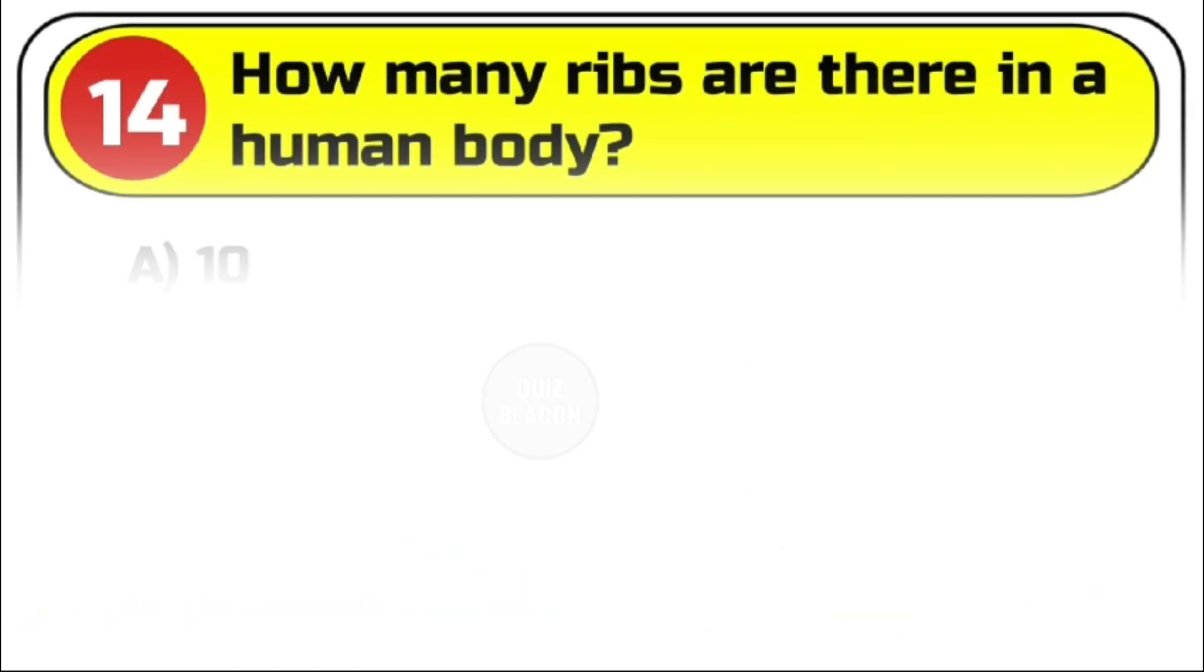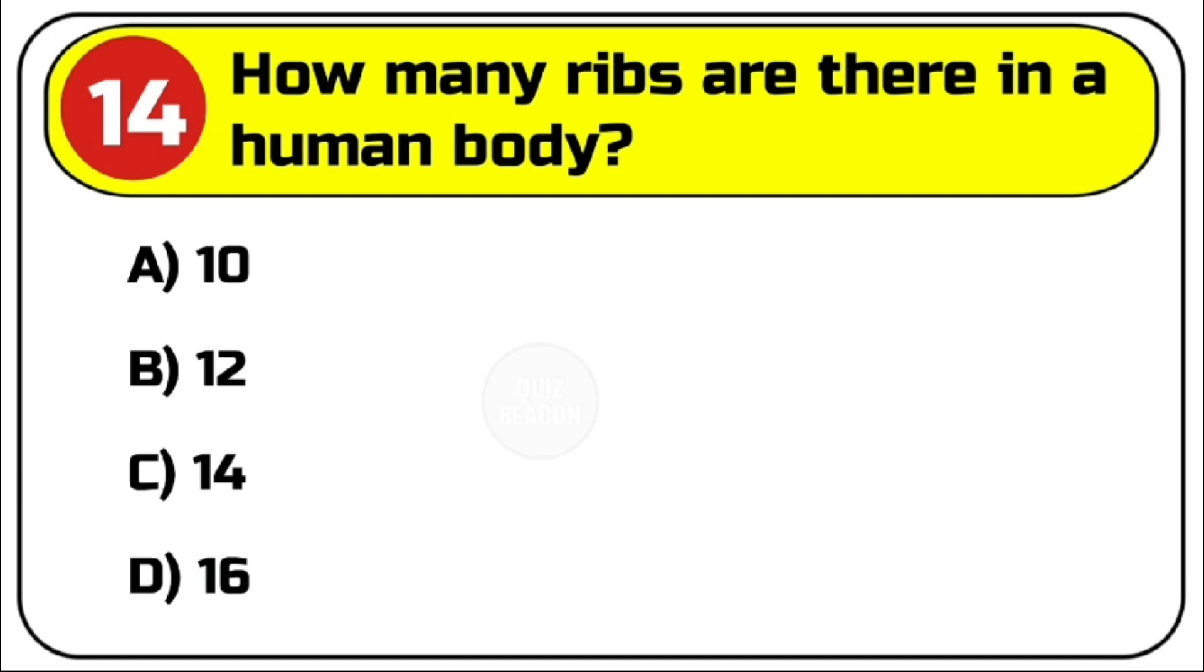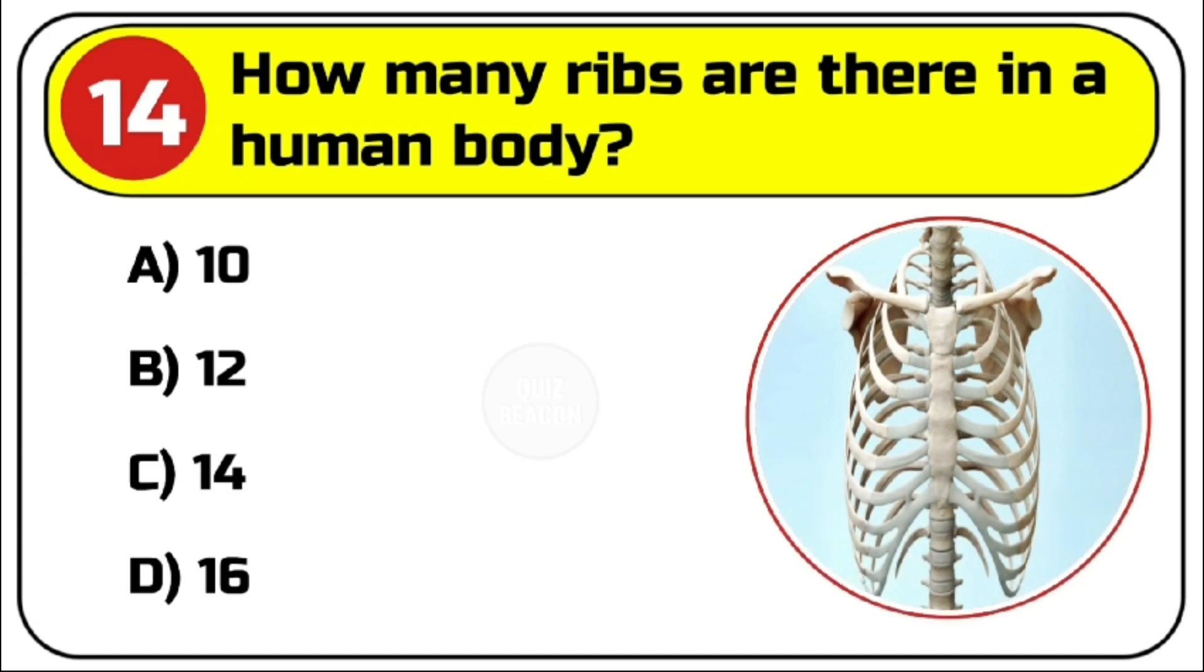Question number 14. How many ribs are there in a human body? Options are A. 10. B. 12. C. 14. D. 16.